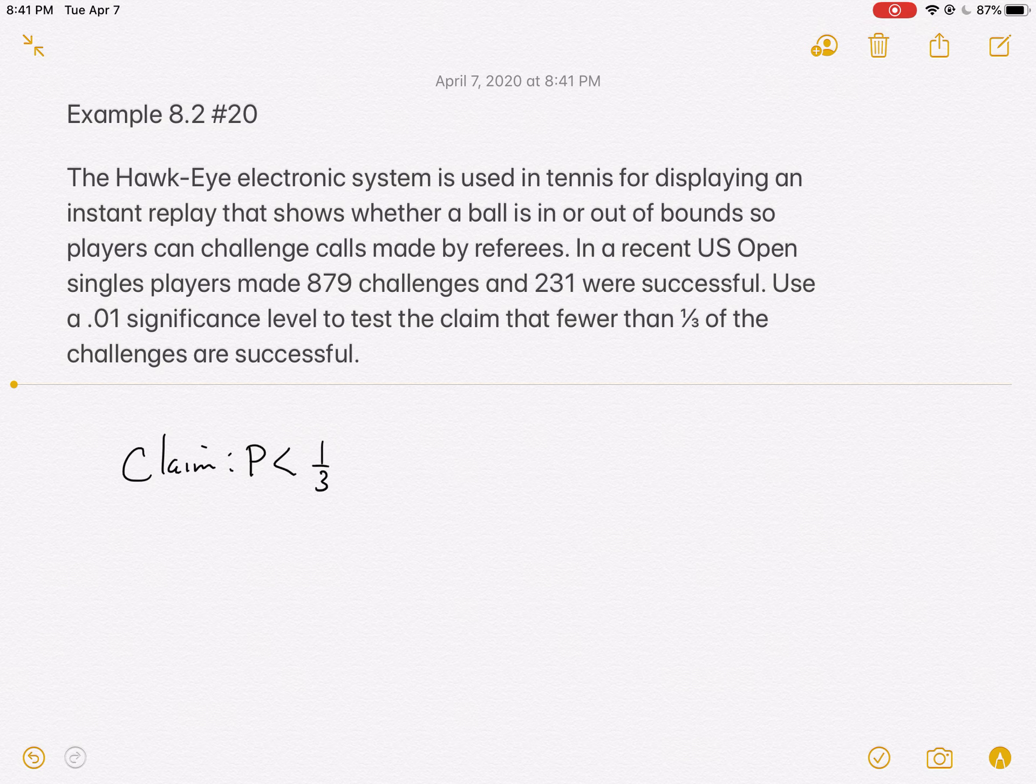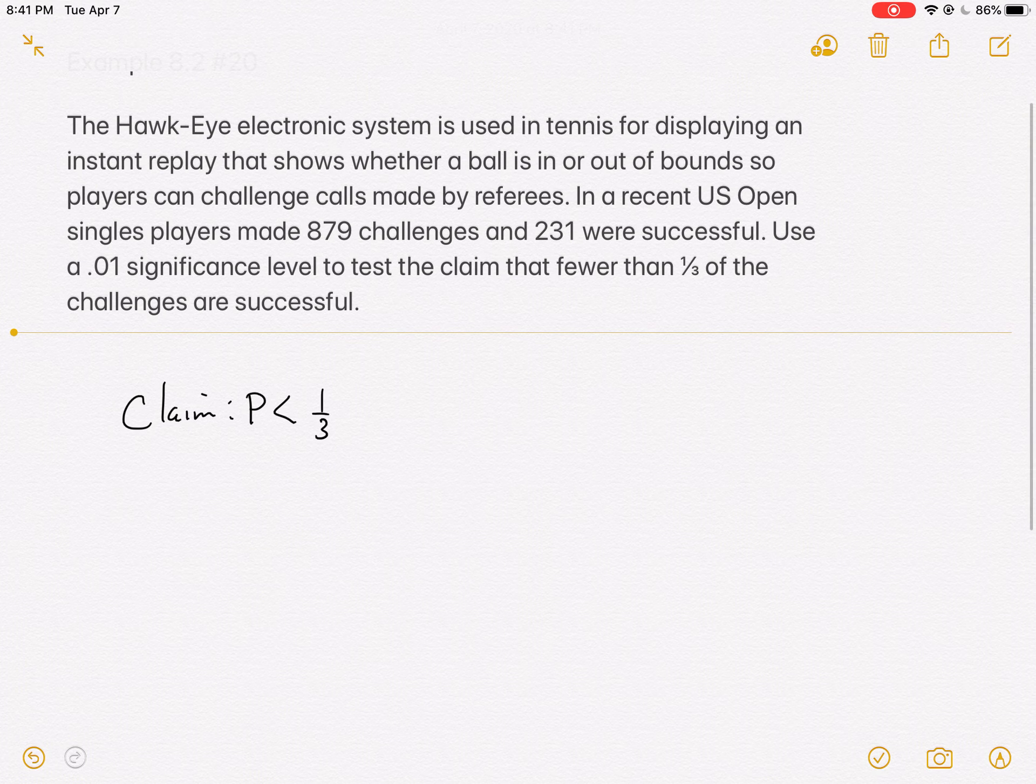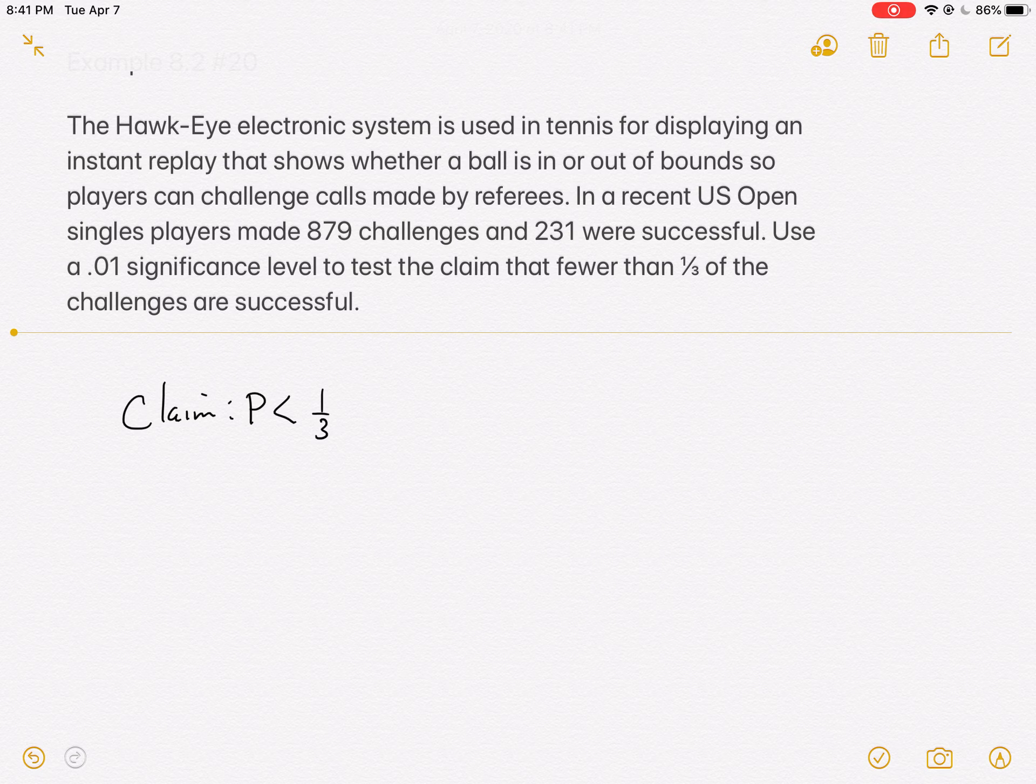We would highly suggest that you use the fraction one-third in the problem as opposed to changing that out to its decimal equivalent. One-third is perfect. 0.33 or whatever else you may write is the decimal approximation, and we like to keep things perfect if possible.